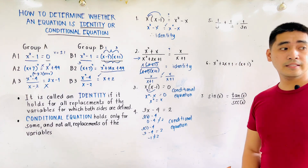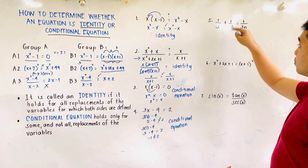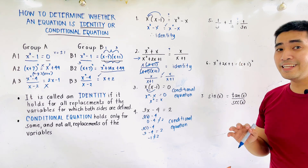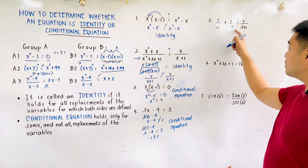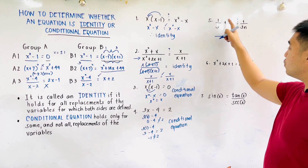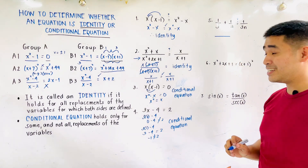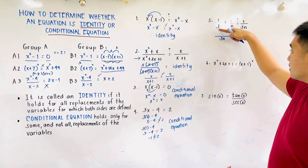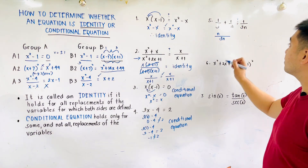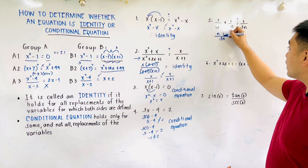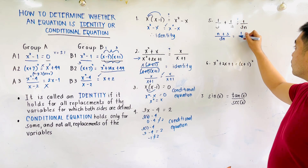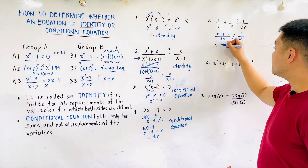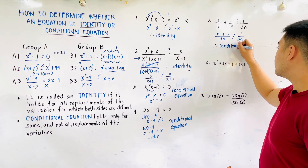For number five, the given is 1 third plus 1 over n. Is that equal to 1 over 3n? Let's manipulate the left side. For two fractions, get the LCD, which is 3n. 3n divided by 3 is n times 1 is n. 3n divided by n is 3 times 1, which is 3. So we get n plus 3 over 3n. Is n plus 3 over 3n equal to 1 over 3n? They're not equal. Therefore, this is a conditional equation.